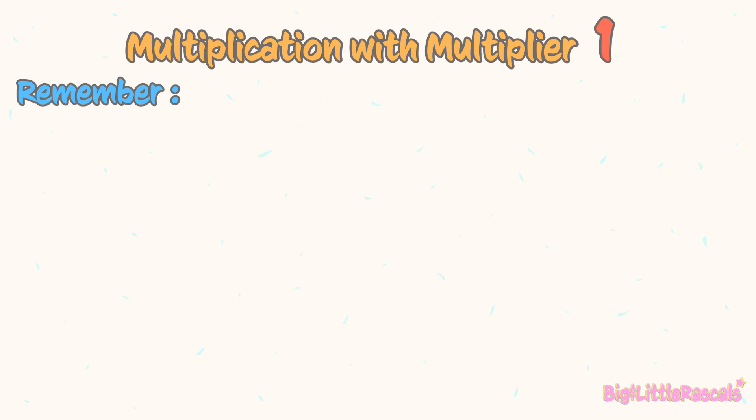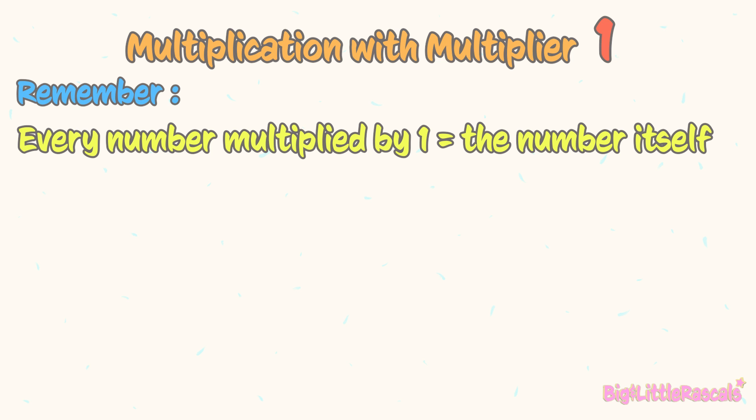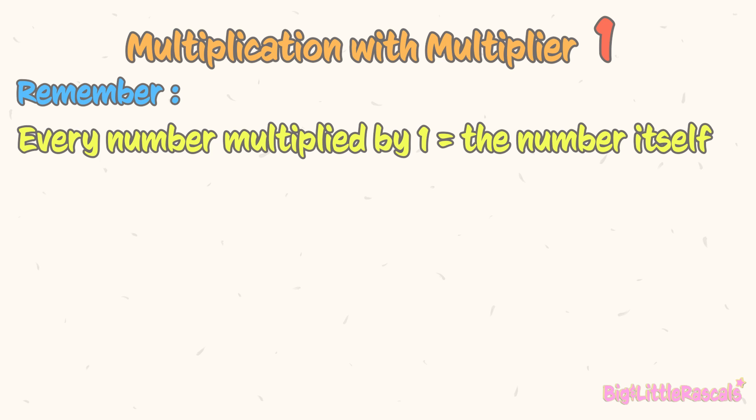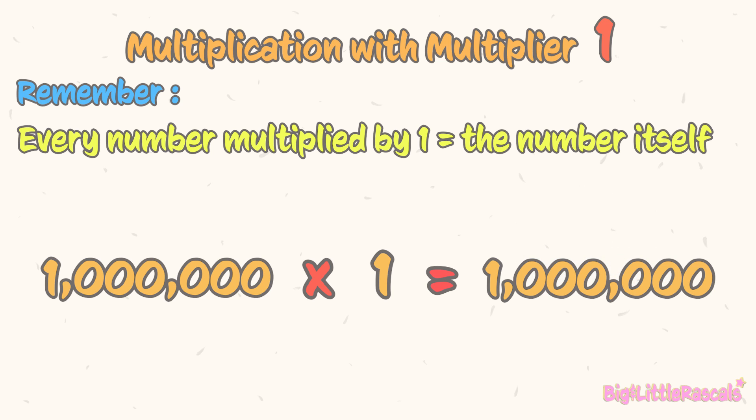You just need to remember the rule: every number multiplied by 1 is the number itself. Why? Let's see this. Only 1 Mickey the fish has 3 starfish friends. So, how many starfishes are there in total? The answer is 3 starfishes! So, every number multiplied by 1 is equal to the number itself. Let's see another example: 1 million multiplied by 1 is equal to the number itself, which is 1 million. Easy, right?